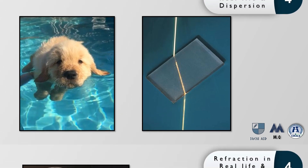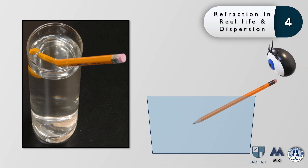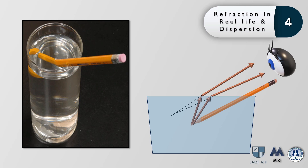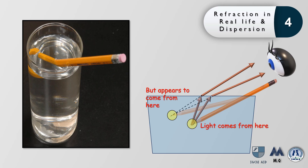When a pencil is inserted in a glass of water, it appears off-position. Following the light rays from the sharp end of the pencil, each ray refracts at the water-air interface towards the eye. The eye does not know the light rays refracted — it assumes they came in a straight path. Extending the lines back, the image appears to come from a different location, making it a virtual image: the light rays appear to come from a position where they are not really located.